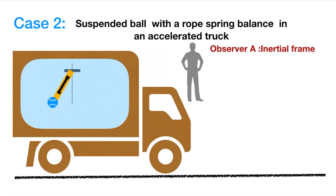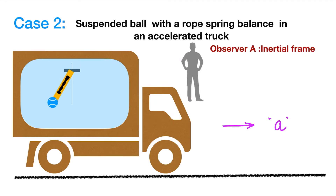Now let's consider Case 2: a ball suspended with a rope and spring balance in an accelerating truck. The truck is accelerating in the positive x direction with acceleration a. An observer standing on the ground is at rest, so he is in an inertial frame. As per this observer, the ball is hanging at an angle theta with the vertical. The ball has its own weight due to gravity acting downward, and there is a tension T because of the rope. The ball is moving with acceleration a, the same as the truck's acceleration.